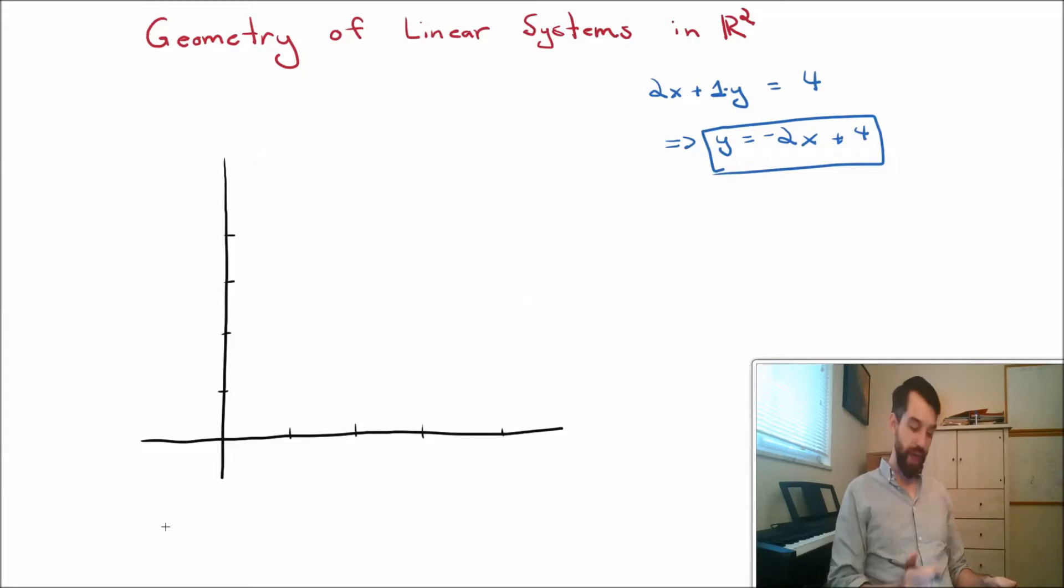And then if I look at the x-intercept, when y is equal to 0, that's when x is equal to 2. So it does something that looks a little bit like this, comes down through 4, and then goes down here to x equal to 2. So there we have it. This line, which I refer to as L, is equal to the solution set.